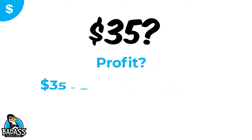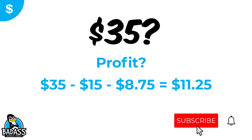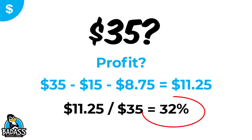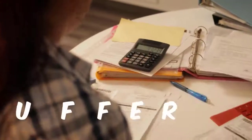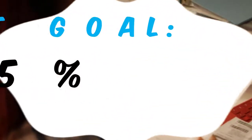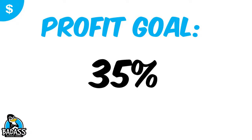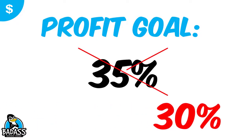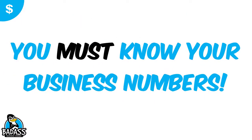What does that leave for profit? $35 minus $15 minus $8.75 leaves $11.25, which turns out to be only 32% — and our goal was 35%. If you keep selling at $35 and only setting aside $8.75 for expenses but actually need closer to $11, you'll have a shortage that comes out of profits. That's why correct markup matters: if expenses are actually running higher, 25% soon becomes 30% and your profit drops from 35% to 30%.